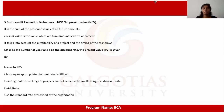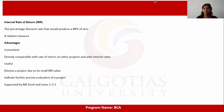There are certain issues with NPV: choosing an appropriate discount rate is difficult, and ensuring that project rankings are not sensitive to small changes in the discount rate is a concern. The guideline is to use the standard rate prescribed by the organization. Then we have the Internal Rate of Return (IRR) — the percentage discount rate that provides an NPV of zero. It is a relative measure, more convenient, and directly comparable with the rate of return on other projects and with interest rates. It is useful for dismissing a project due to a small IRR and is supported by MS Excel.